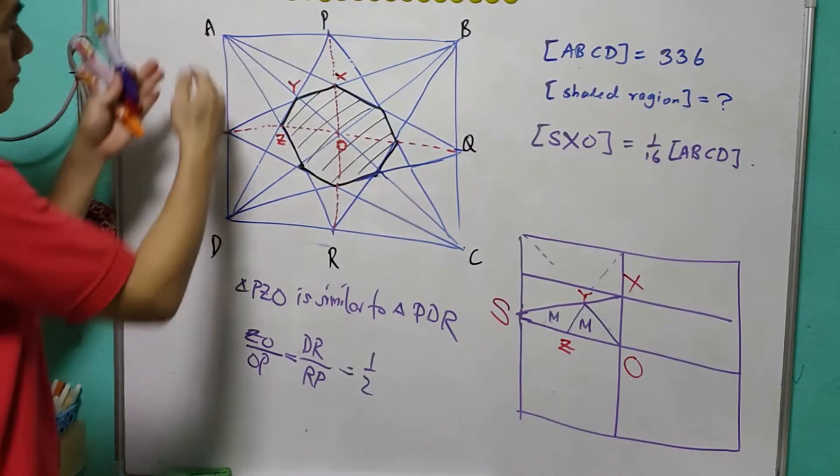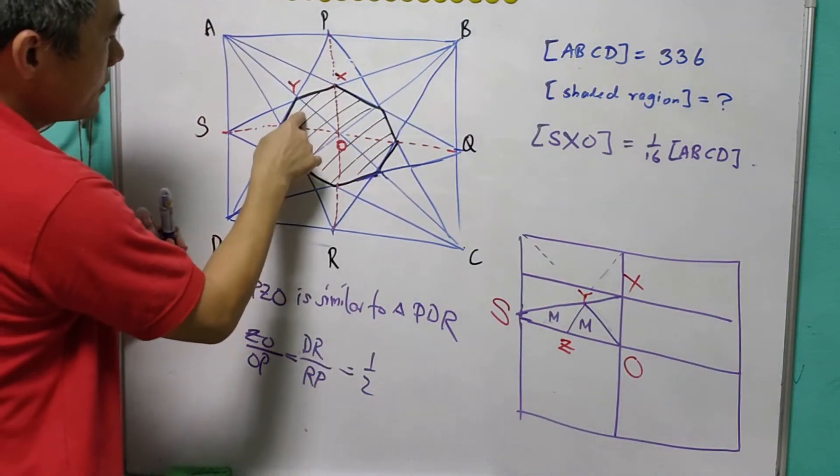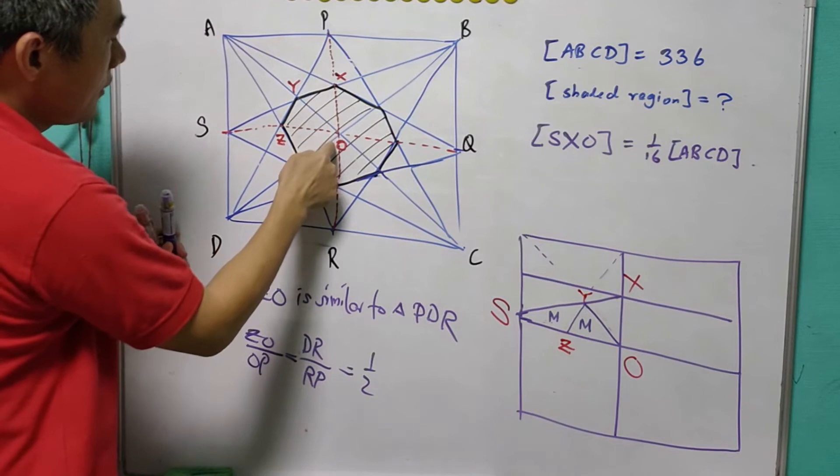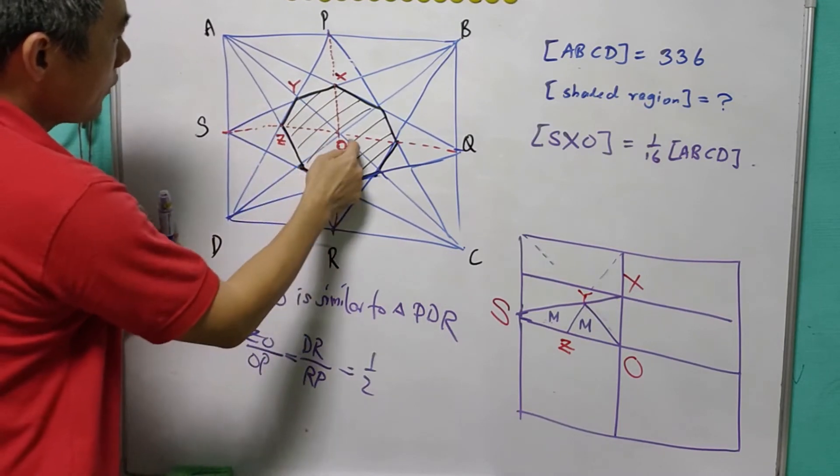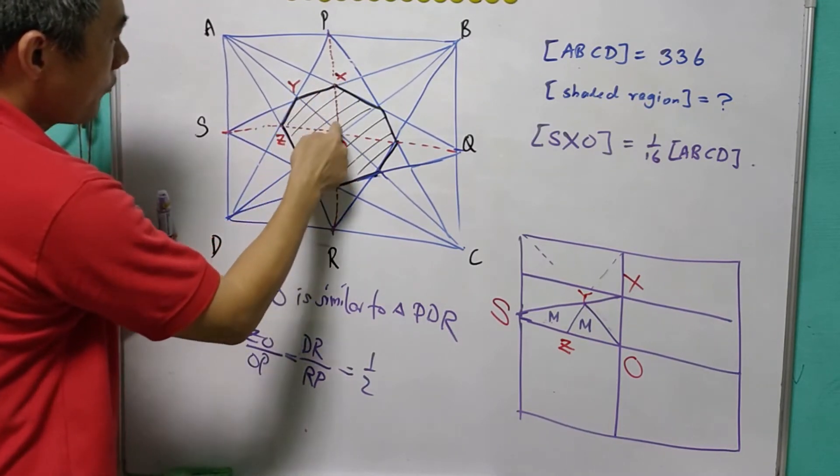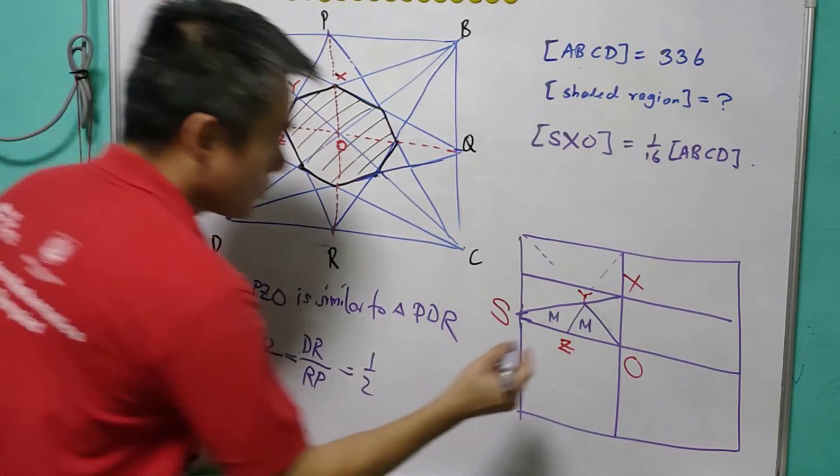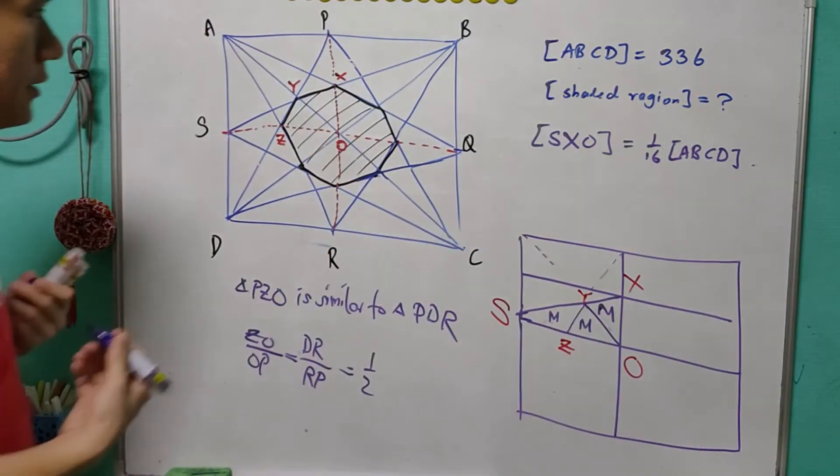By symmetry, it is easily seen that the triangle OZY and OZY are of the same area. So, this is another M.